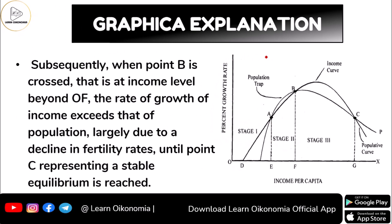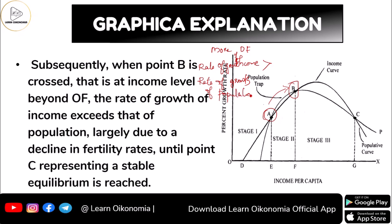Gradually, you will go from point A to point B. When you are able to cross point B, your income will be more than OY, and the rate of growth of income — not actual income but the rate of growth of income — will be exceeding the rate of growth of population. This happens largely due to a declining fertility rate, and this continues until you reach point C, a stable equilibrium.